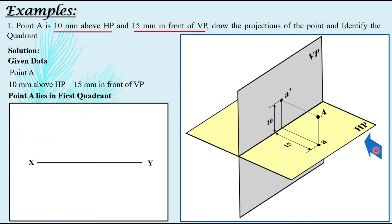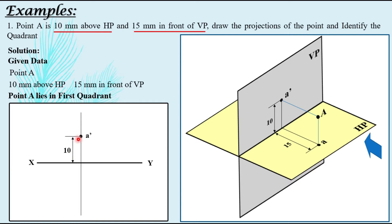First step: draw the XY line and take a vertical projector. On this, locate 10 mm above — as explained, the distance mentioned with HP is used to draw the front view. For the first quadrant it is taken above XY line, and you name this point A dash.